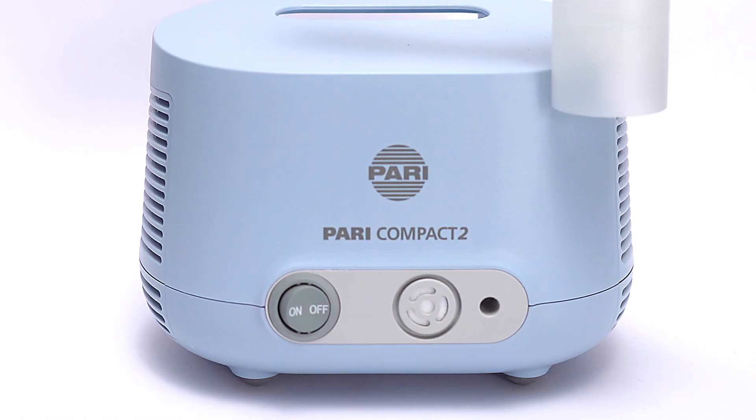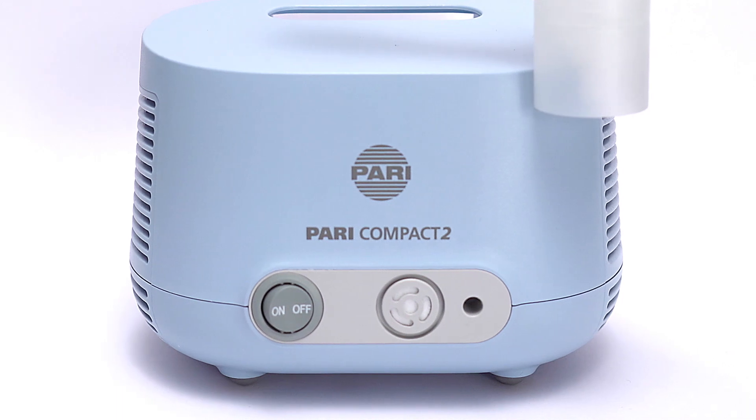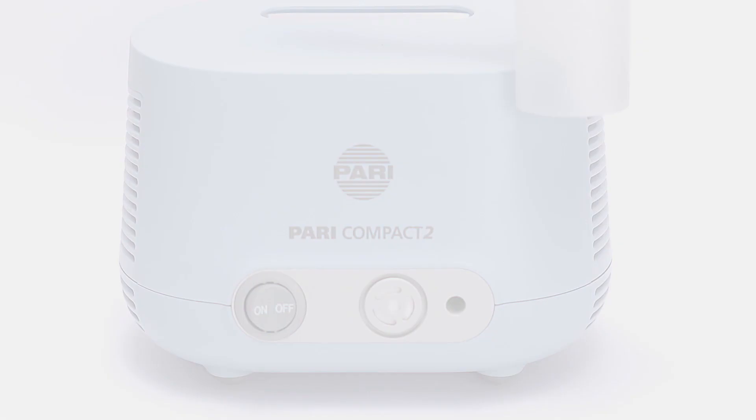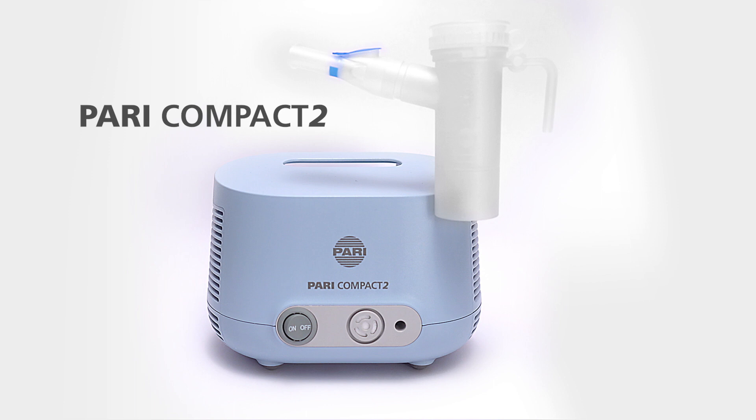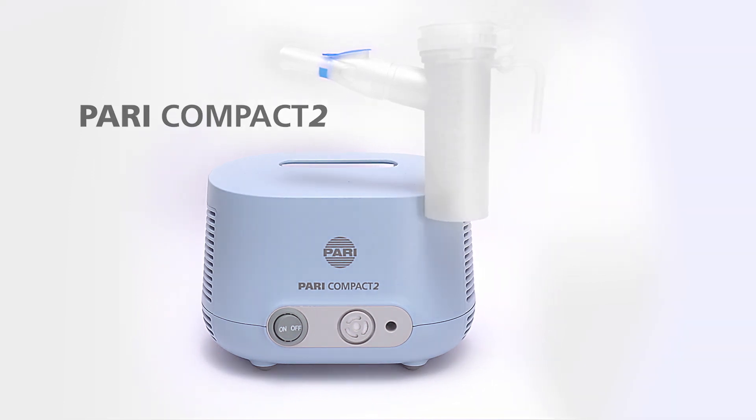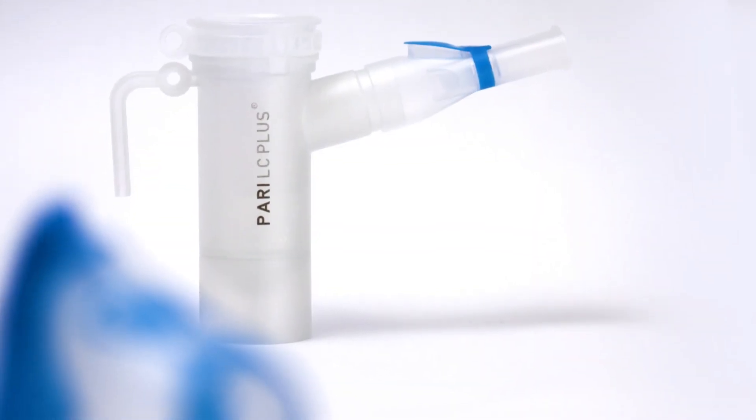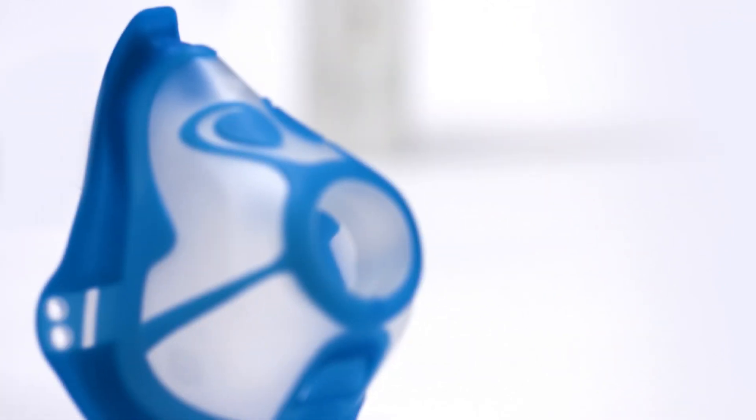PARI Compact 2 is an inhalation device for adults and children aged four years and older for the treatment of diseases of the lower airways. It's equipped with a PARI LC Plus nebulizer and a PARI Child Mask.